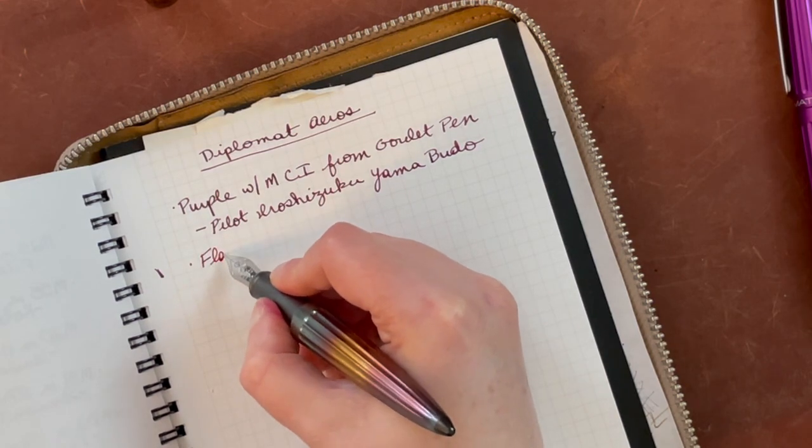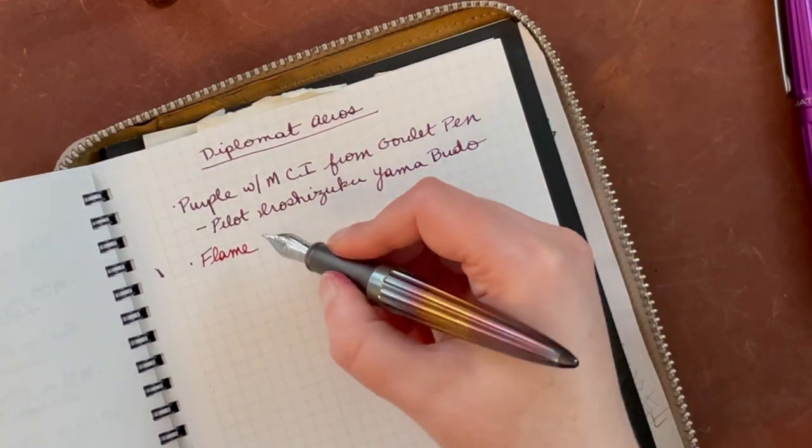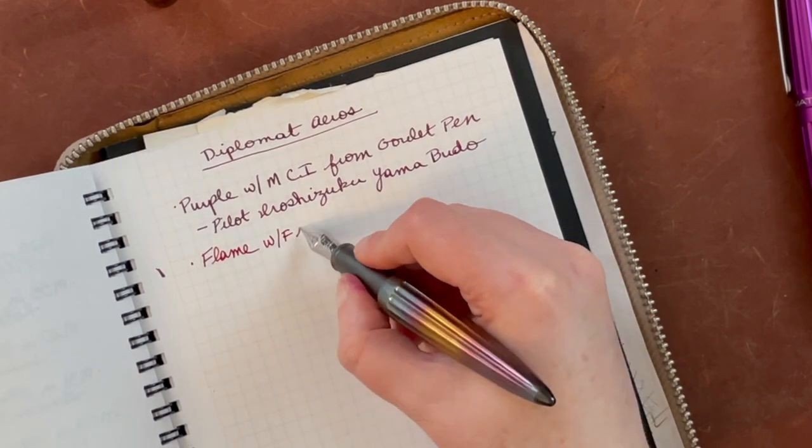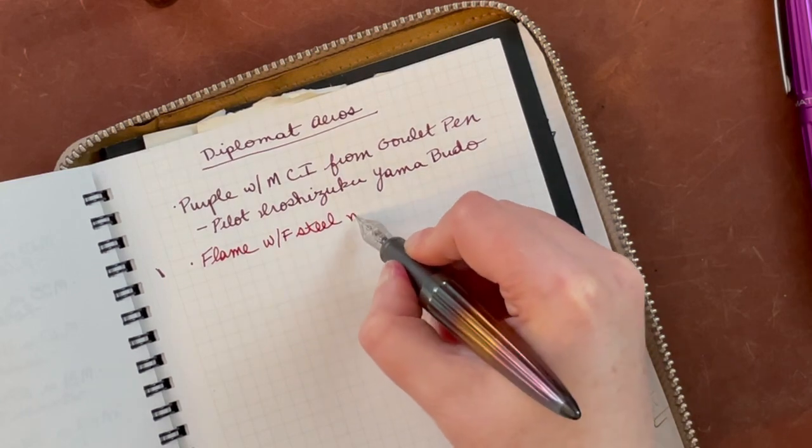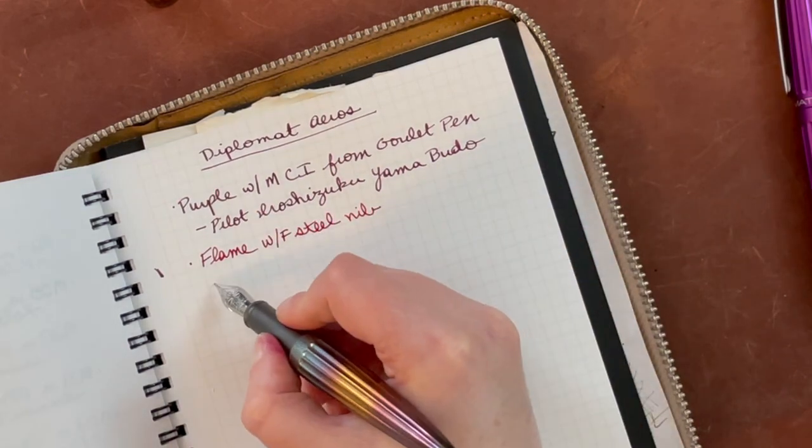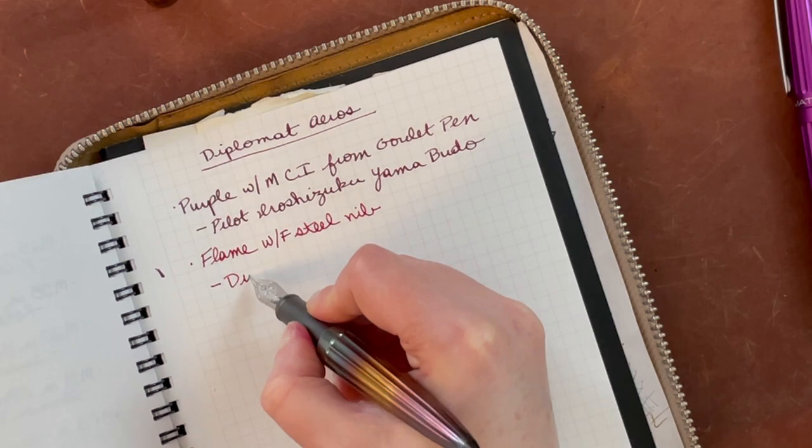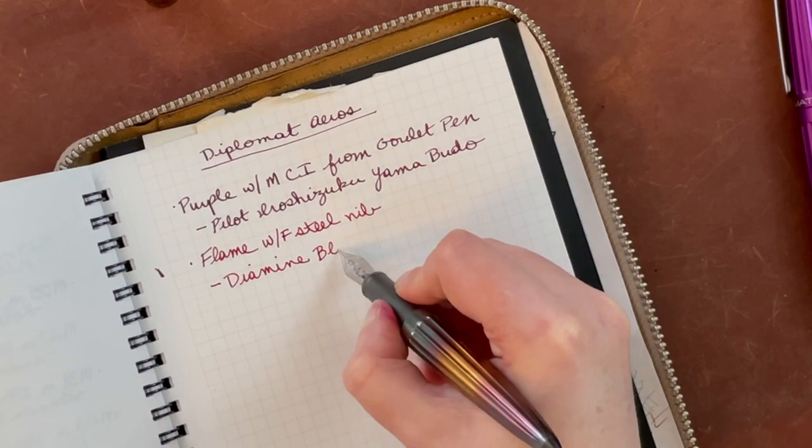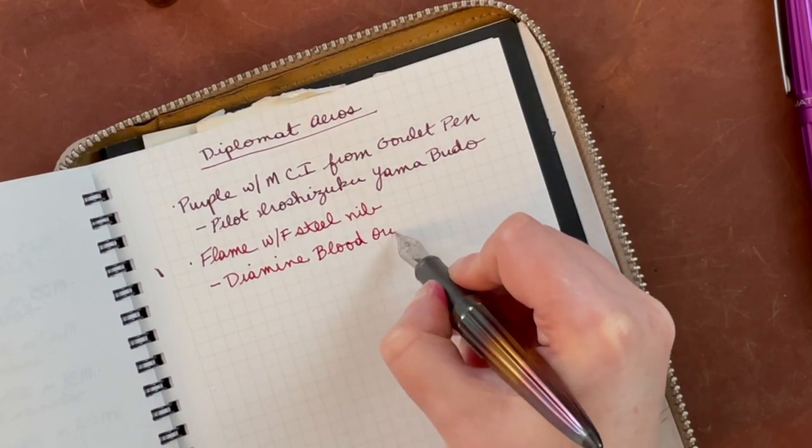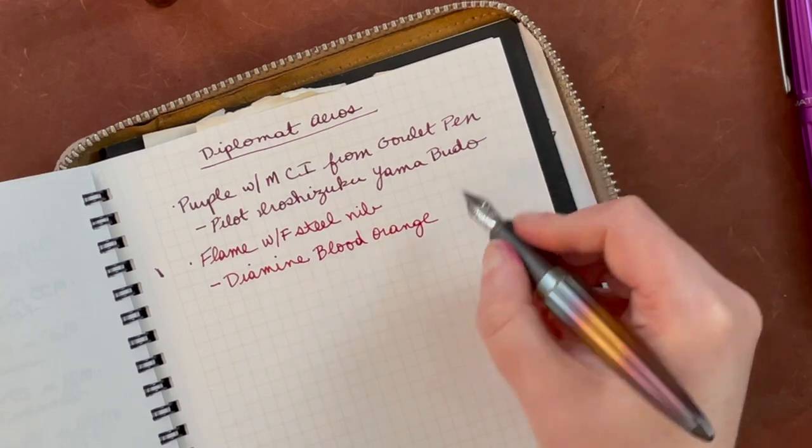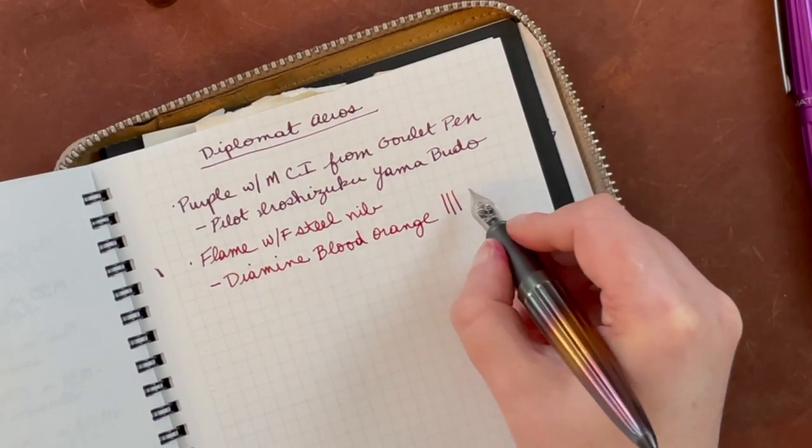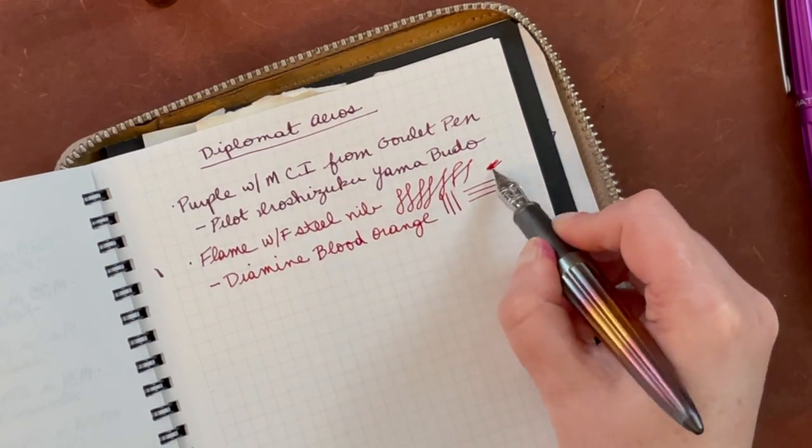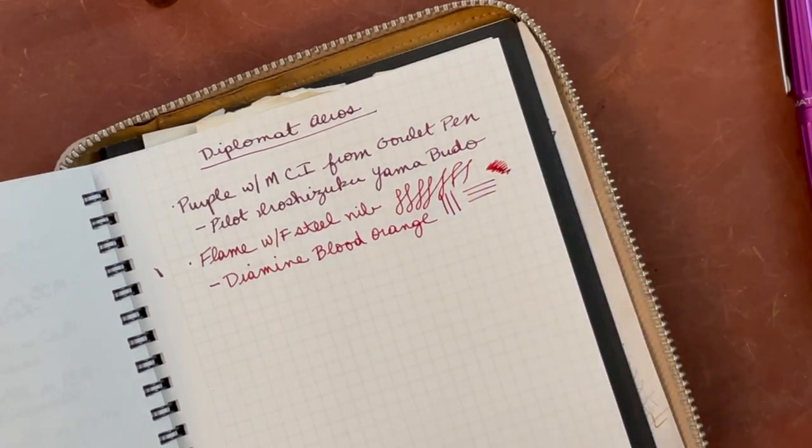So this is the flame with a fine steel nib. And then this color is Diamine Blood Orange, which is a lovely combination. I guess I should do the typical, this ink in particular is just, it's a gorgeous ink. I love it.